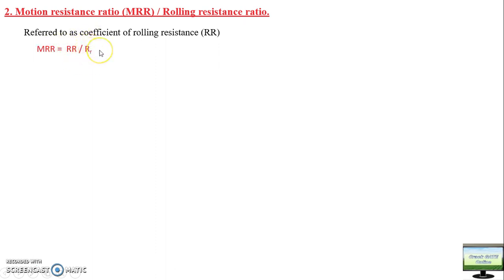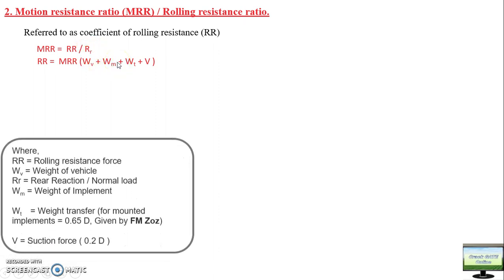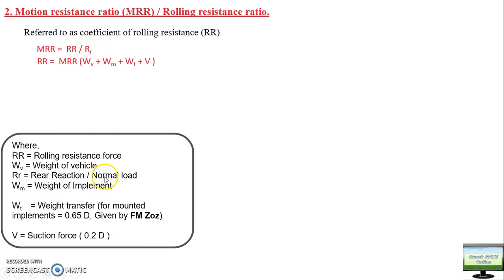The rolling resistance force is the multiplication of MRR into RR (normal reaction force). This normal reaction force RR consists of several things: WV is the weight of your tractor or vehicle, WM is the weight of your implement, and WT is the weight transfer. When you attach an implement to your tractor, there is weight transfer from the front axle to the rear axle, as well as from the implement onto the tractor. The weight transfer from the implement side is 65% of draft force, as given by scientist FM George.